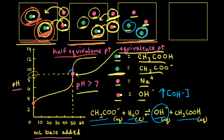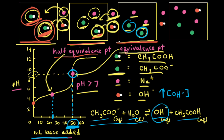Going back to our titration curve, dropping down to the x-axis shows the equivalence point is reached after 50 milliliters of base have been added. Since it takes 50 mL of base to reach the equivalence point, it takes half that volume — 25 milliliters — to reach the half equivalence point. We can now mark the approximate location of the half equivalence point on our titration curve.